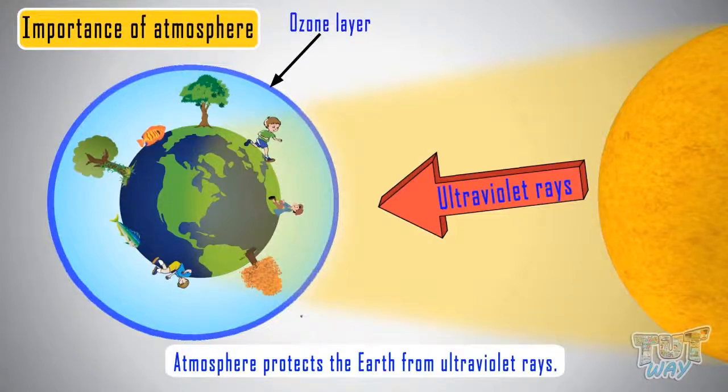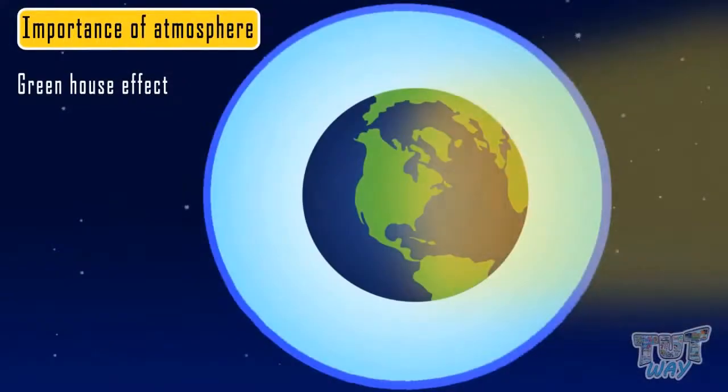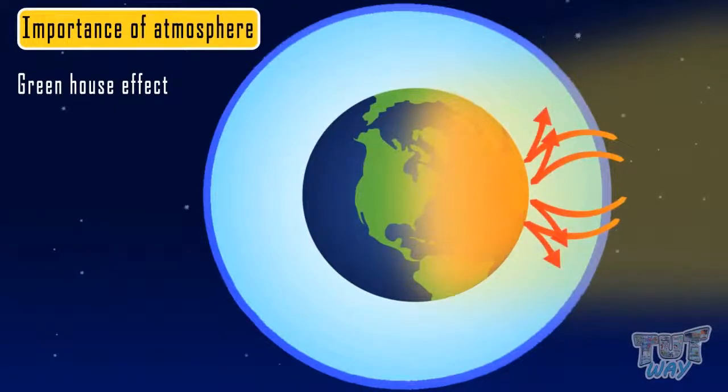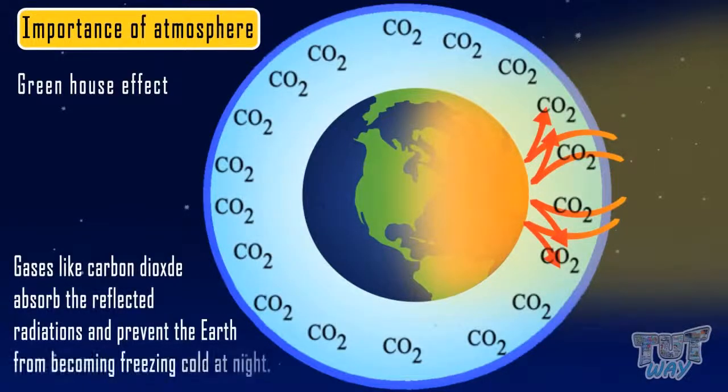When the Earth gets heated upon getting the solar radiation, the Earth's surface reflects off this energy into the space at night time. But gases like carbon dioxide absorb these reflective radiations and prevent Earth from becoming freezing cold by reflecting off all the solar radiations. And this is known as greenhouse effect.